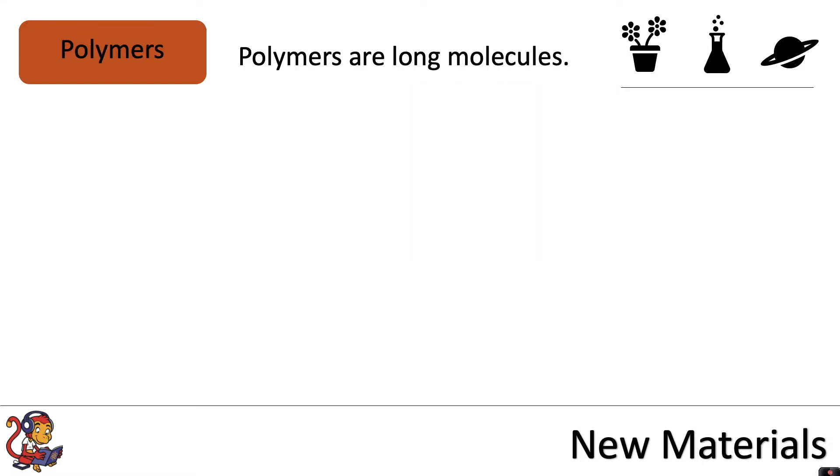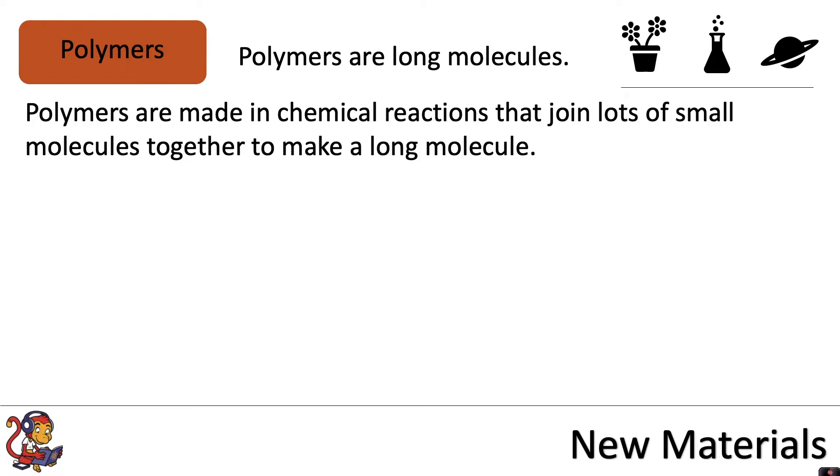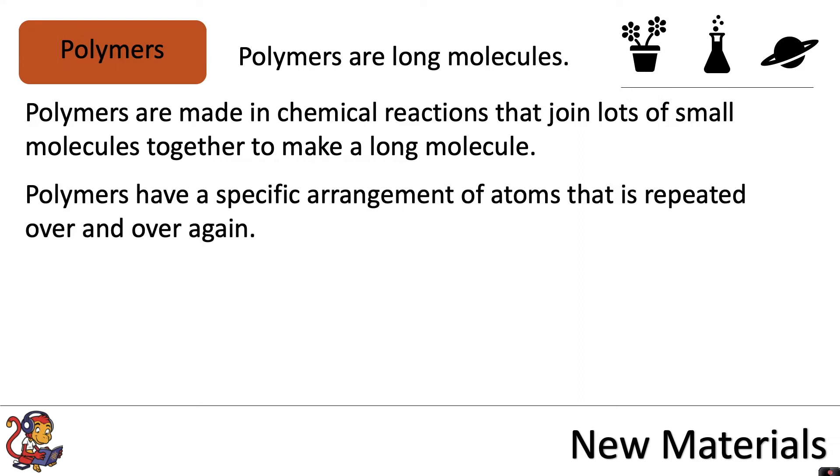Polymers are long molecules. Polymers are made in chemical reactions that join lots of small molecules together to make a long molecule. Polymers have a specific arrangement of atoms that is repeated over and over again.